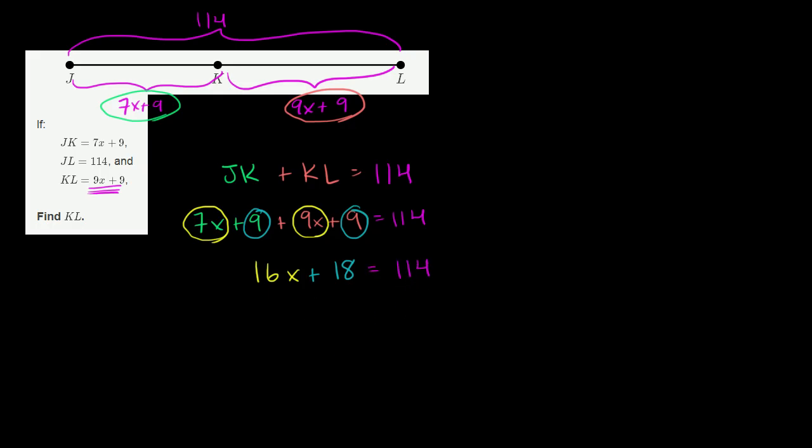Now I just subtract 18 from both sides. Let me do that explicitly. So I subtract 18 from both sides. On the left hand side, I have 16x. And on the right hand side, I'm going to have 114 minus 18. Well, if I were to subtract 14, that would get me to 100. And I'm going to subtract 4 more than that. So that's going to get me to 96.